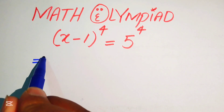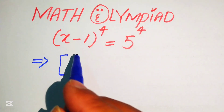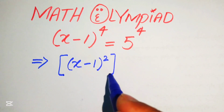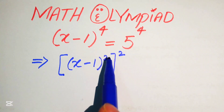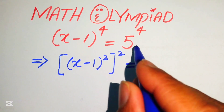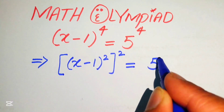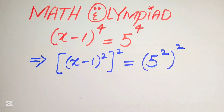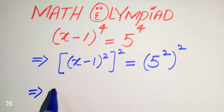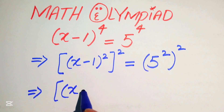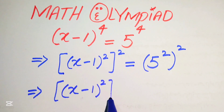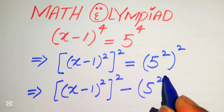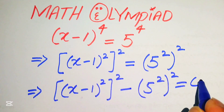The very first step is to rewrite this equation. We write it as (x minus 1) whole squared, whole power 2. We break the exponent 4 and write it in this form, and it equals 5 to the power of 4, written as (5 squared) whole squared. In the next step we move the (5 squared) whole squared to the left-hand side, giving (x minus 1)² whole squared minus (5²) whole squared equals 0.